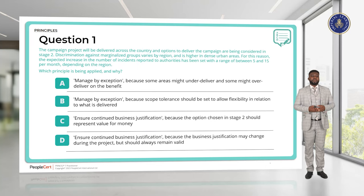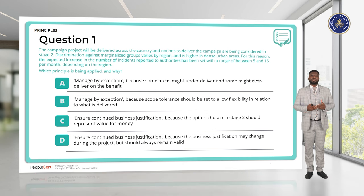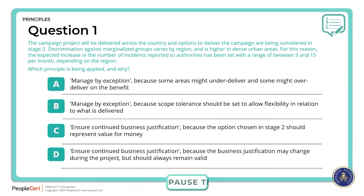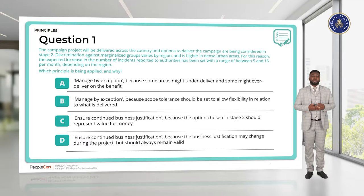Question 1. The campaign project will be delivered across the country, and options to deliver the campaigns are being considered in Stage 2. Discrimination against marginalised groups varies by region and is higher in dense urban areas. For this reason, the expected increase in the number of incidents reported to authorities has been set with a range of between 5 and 15 per month depending on the region. Which principle is being applied and why? We have Management by Exception and Continued Business Justification as options.